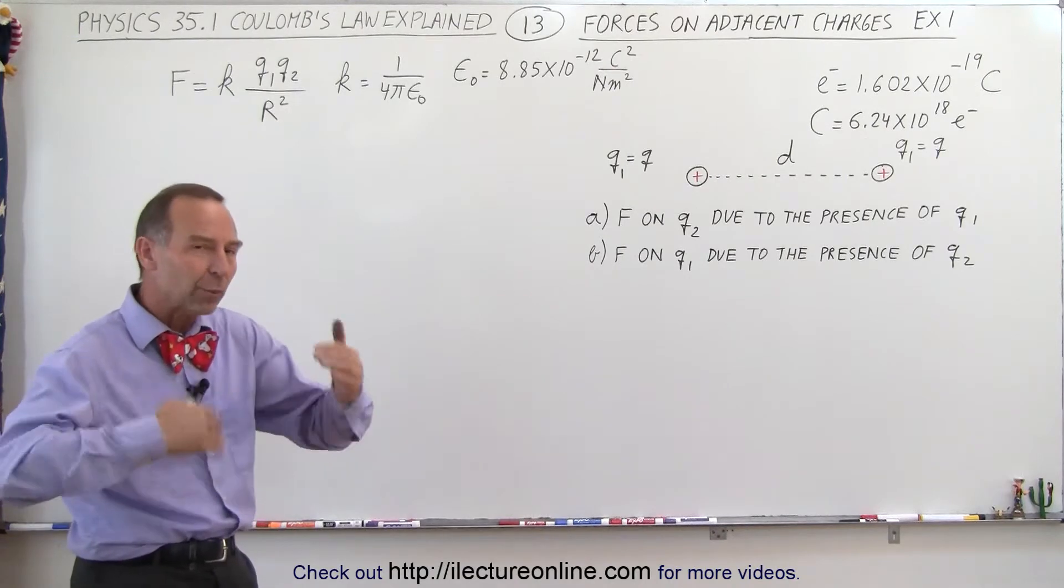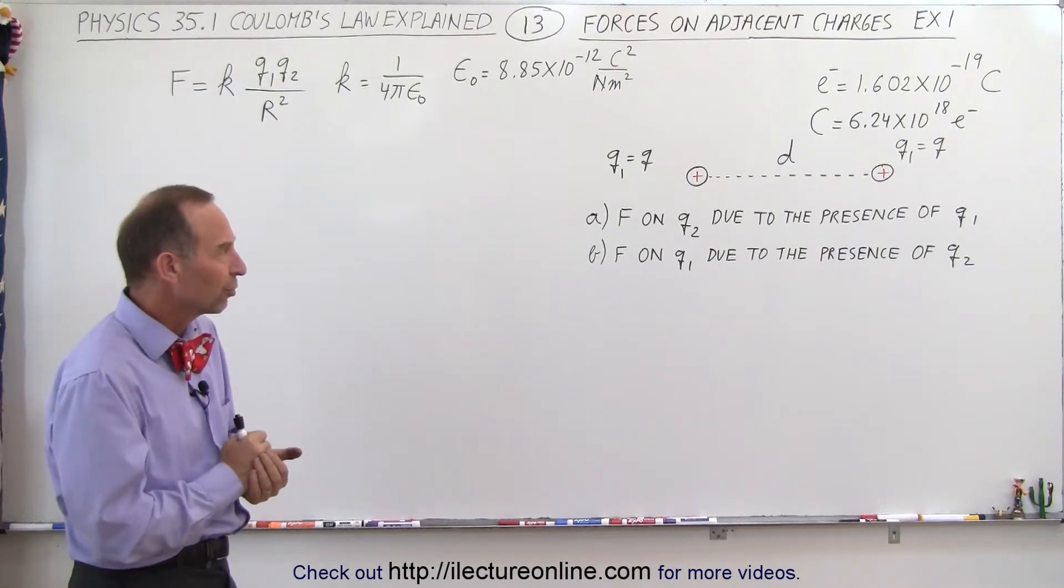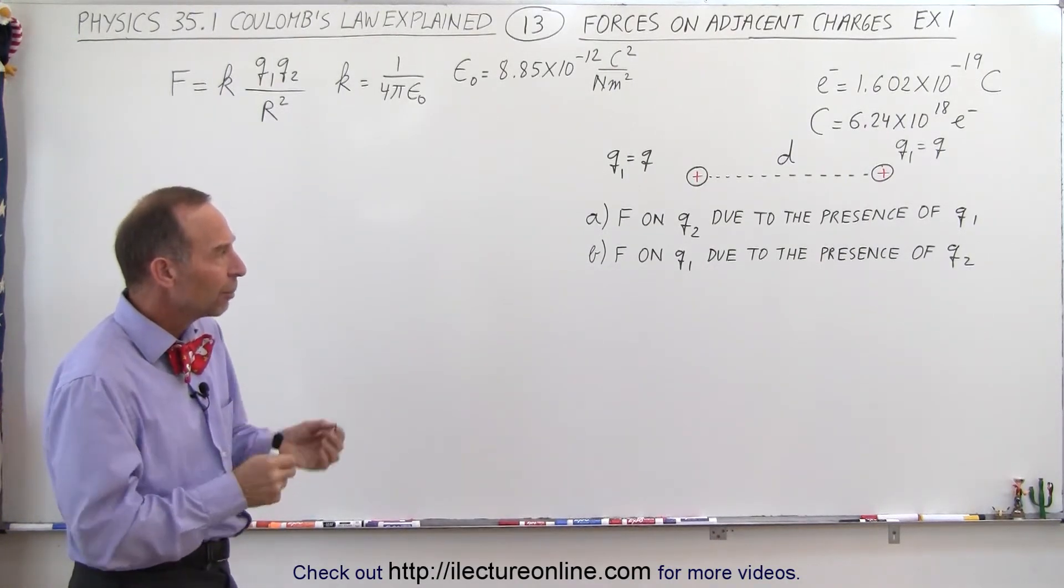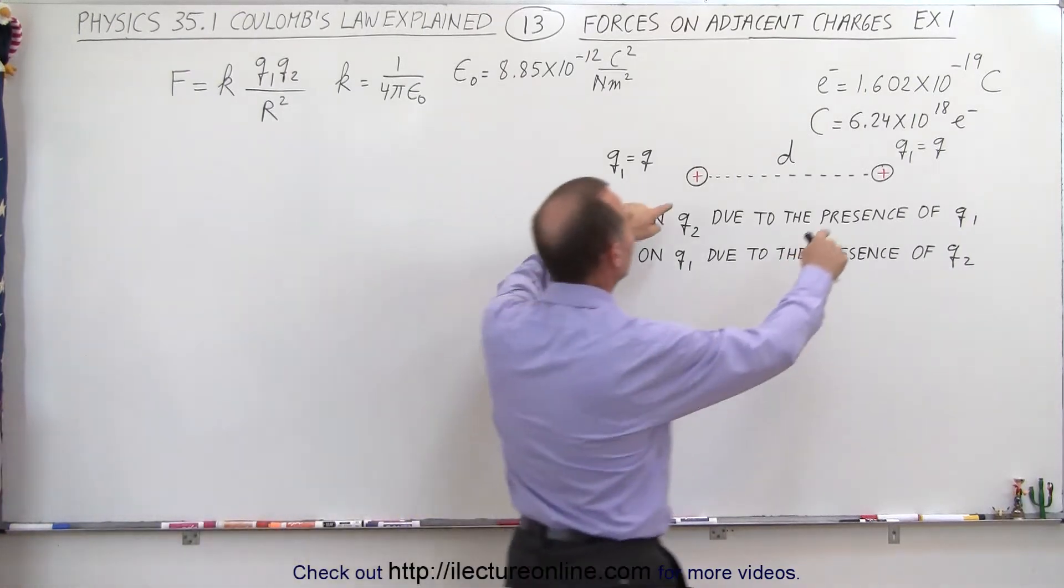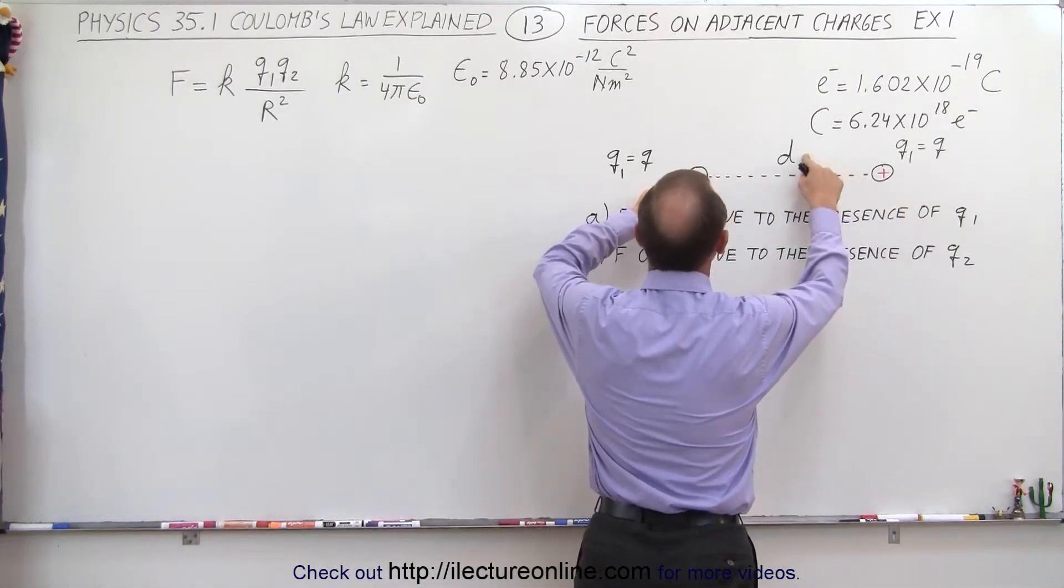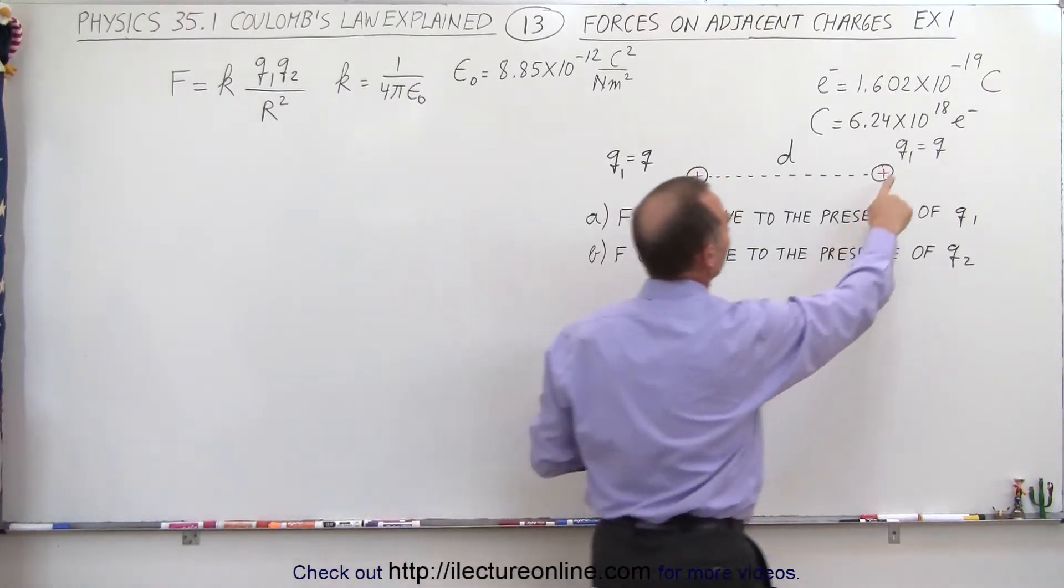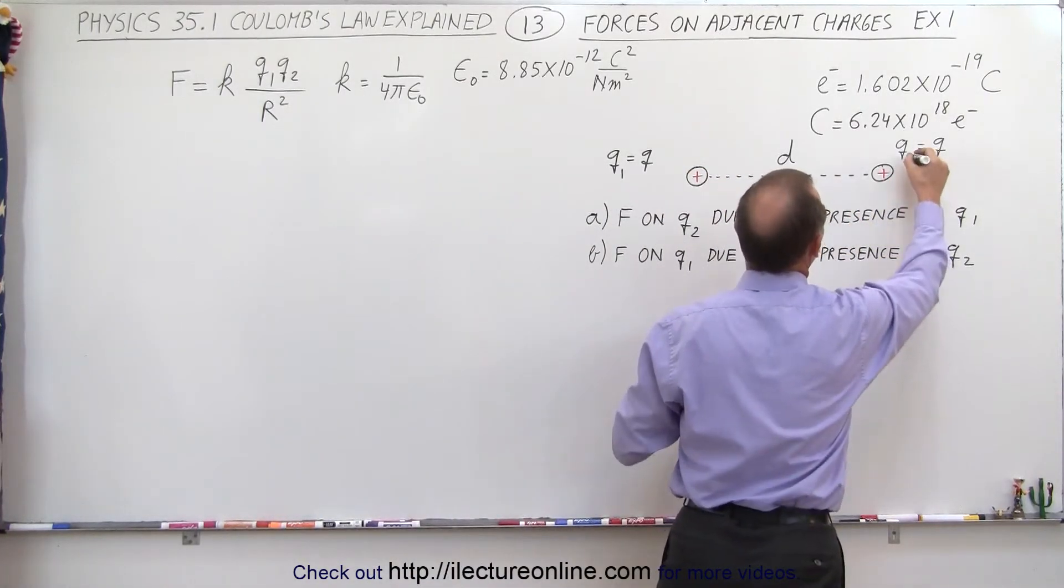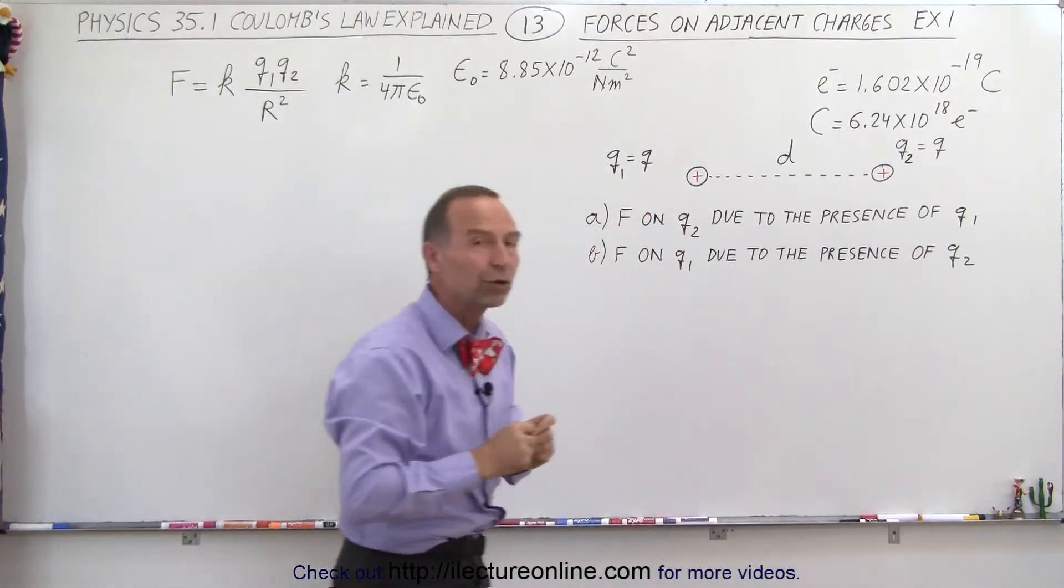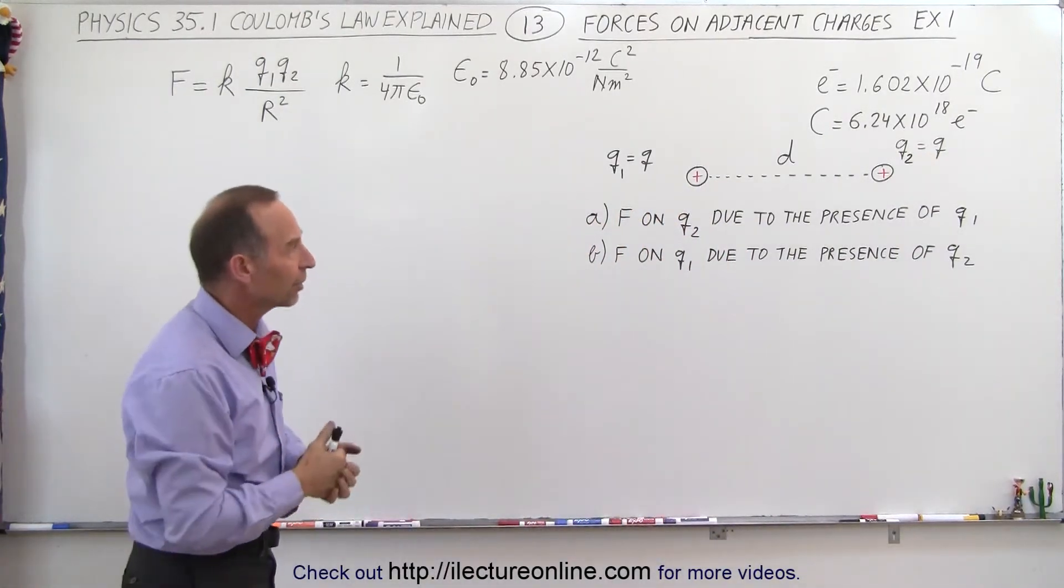We're starting with something very simple and we'll work ourselves up to some more complicated examples. But first we start with just two charges, a distance d apart, and each of the two charges q1 and q2 have the value of q, so they are equal in value on the charge.